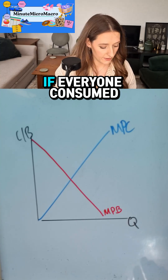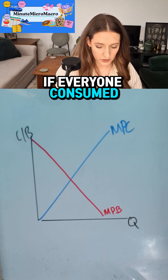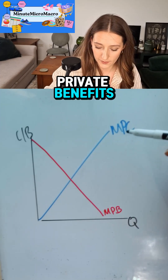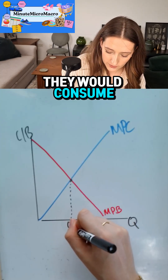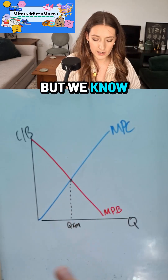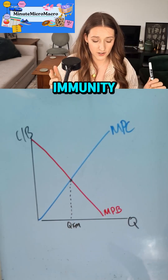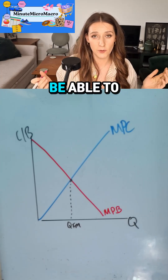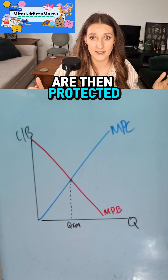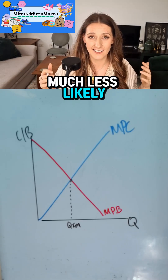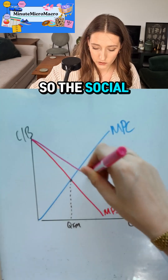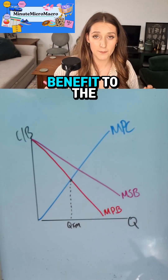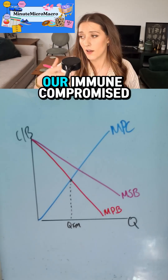An example of positive externalities of consumption would be vaccinations. If everyone consumed vaccines based on their own private costs and private benefits, they would consume at Qfm. But we know vaccinations create herd immunity, which means people who are immune-compromised and might not be able to take the vaccine are protected because the people around them are much less likely to become infectious.